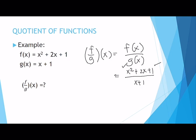We take the square root of x², which is x, and multiply it by the square root of 1, which is 1. Then we multiply by 2, giving us 2x. Since 2x is indeed the middle term of x² + 2x + 1, this confirms that we have a perfect square trinomial.